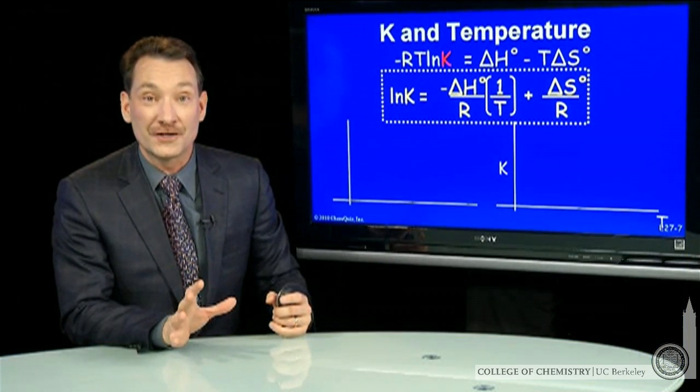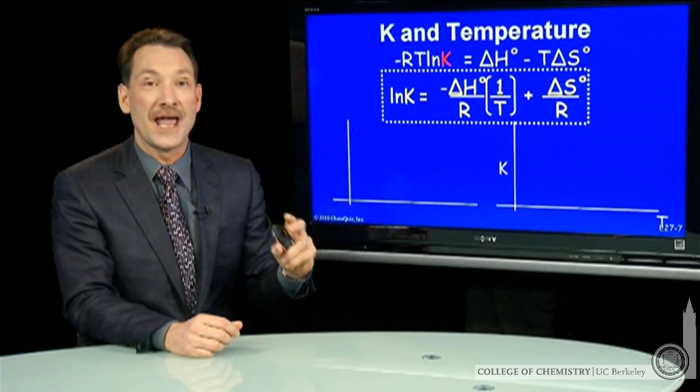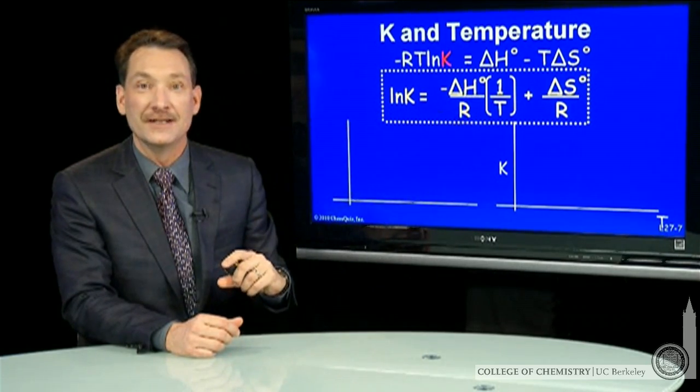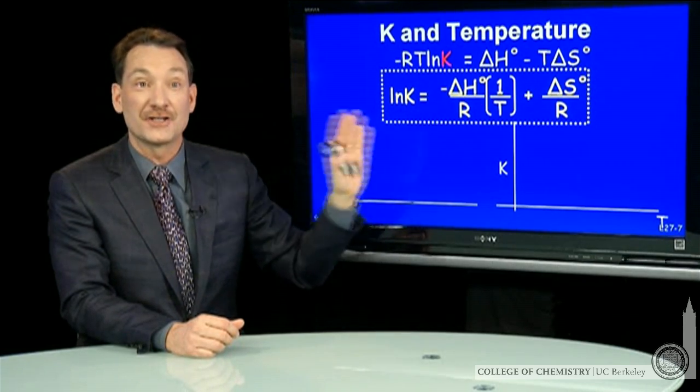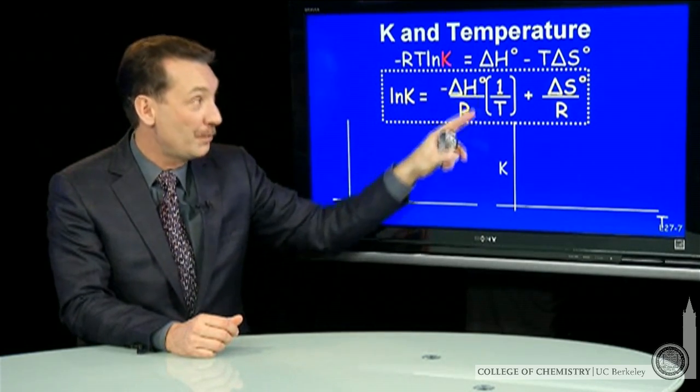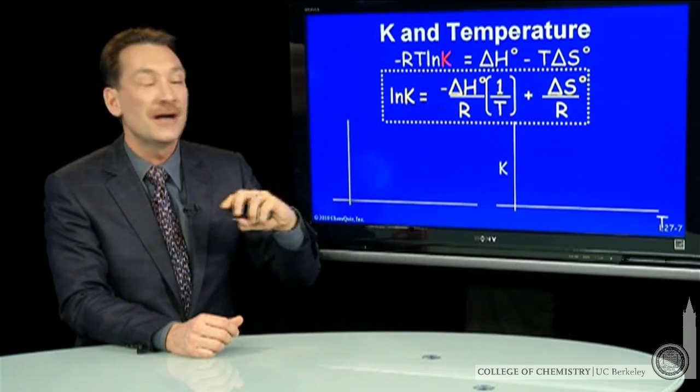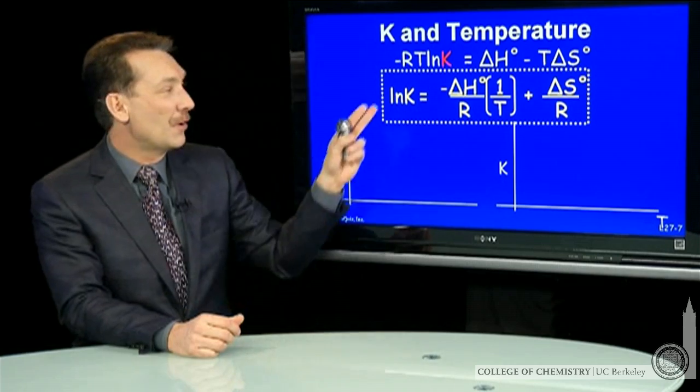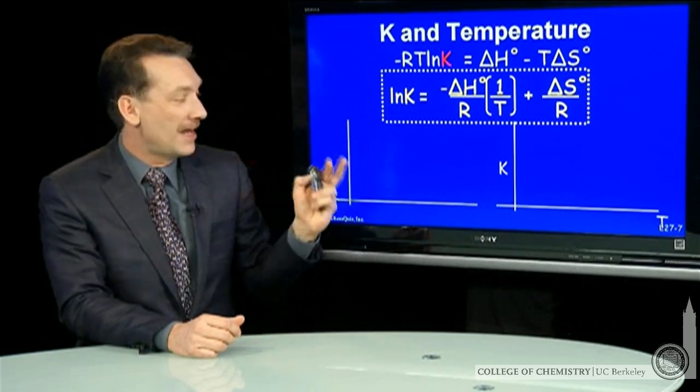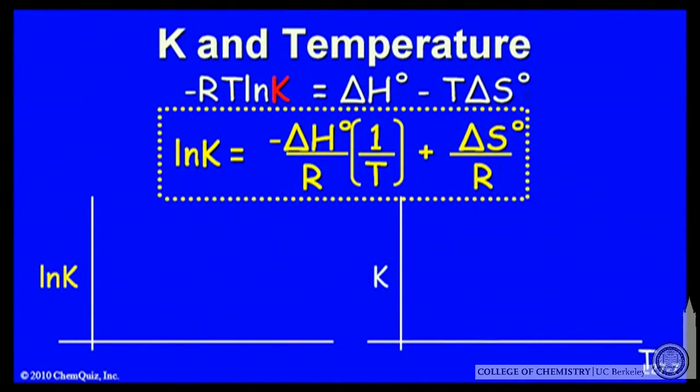Now I have a linear function of natural log K and 1 over T. So if I plot ln K versus 1 over T, I expect a straight line with slope negative ΔH over R and intercept ΔS over R. Natural log K, I'll plot that versus 1 over T.